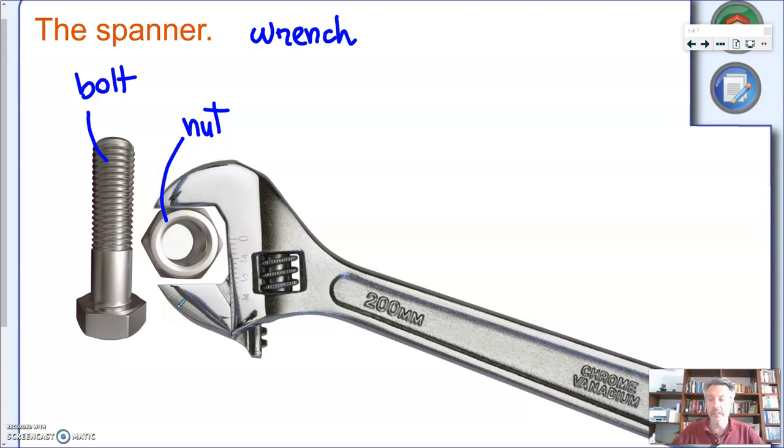So you use a spanner or wrench in order to tighten or loosen a nut around the bolt. And in mechanics, you find this everywhere. If you take a look, for instance, your bicycle, you'll find these pieces around.